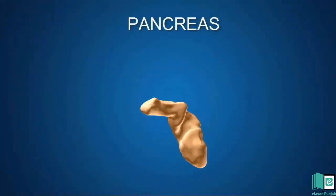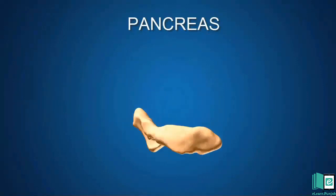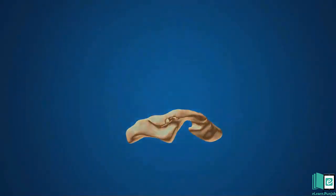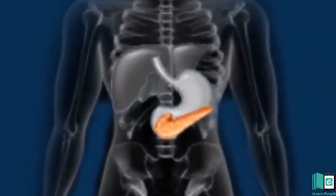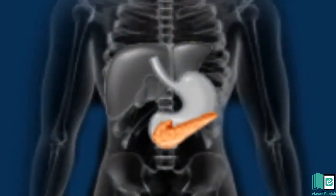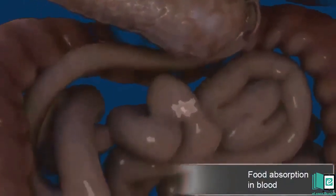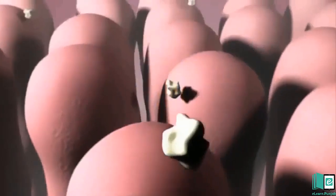Pancreas. The pancreas are situated below the stomach. The pancreas makes juice to digest remaining carbohydrates, proteins and fats. The absorption of the digested food also occurs in the last part of the small intestine. The inner surface of the small intestine has many finger-like structures called villi. The digested food passes into the blood through the walls of the villi. The blood carries food particles to all parts of the body.